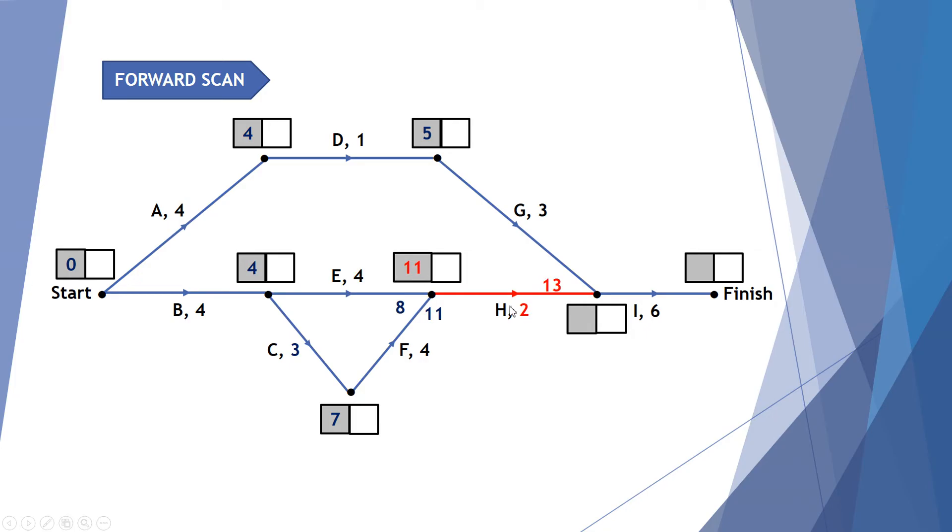Let's continue. 11 plus two weeks for activity H gives me 13 but again we've got two options going here. So five weeks to get activity A and D completed and a further three to get activity G takes me eight weeks. Again we've got two competing numbers going into this one particular node and we take the larger of the value, 13.